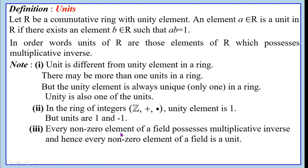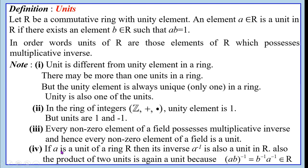Every nonzero element of a field possesses a multiplicative inverse, and hence every nonzero element of a field is a unit. If A is a unit of a ring R, then its inverse A⁻¹ is also a unit in R. Also, the product of two units is again a unit, because (AB)⁻¹ = B⁻¹A⁻¹ belongs to R.